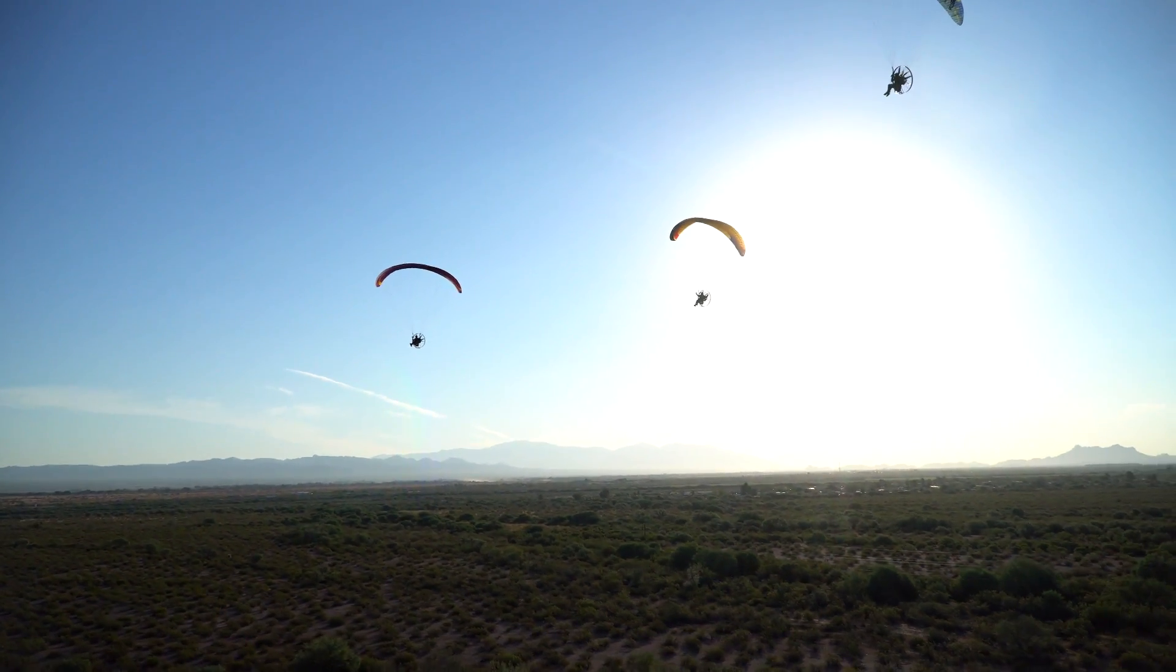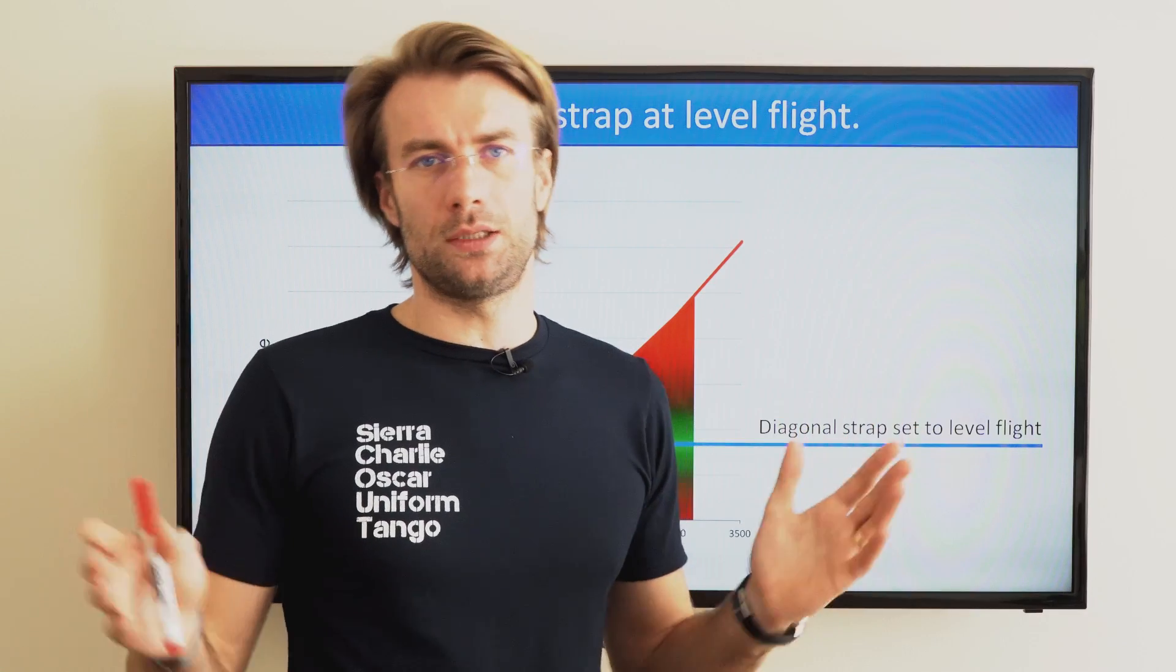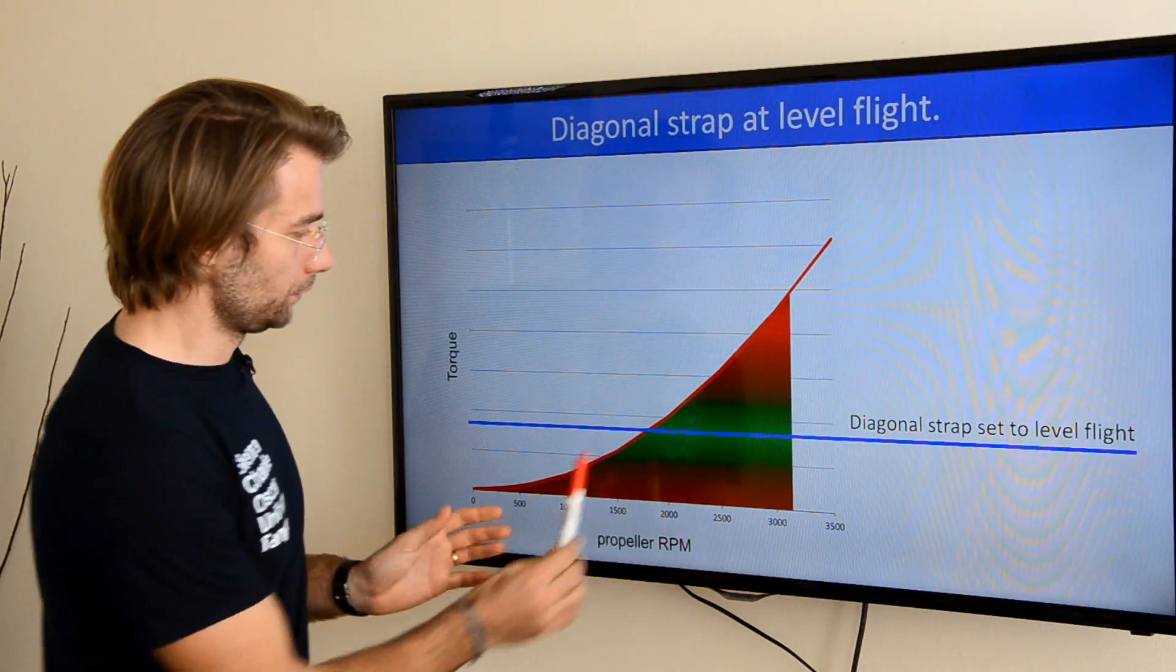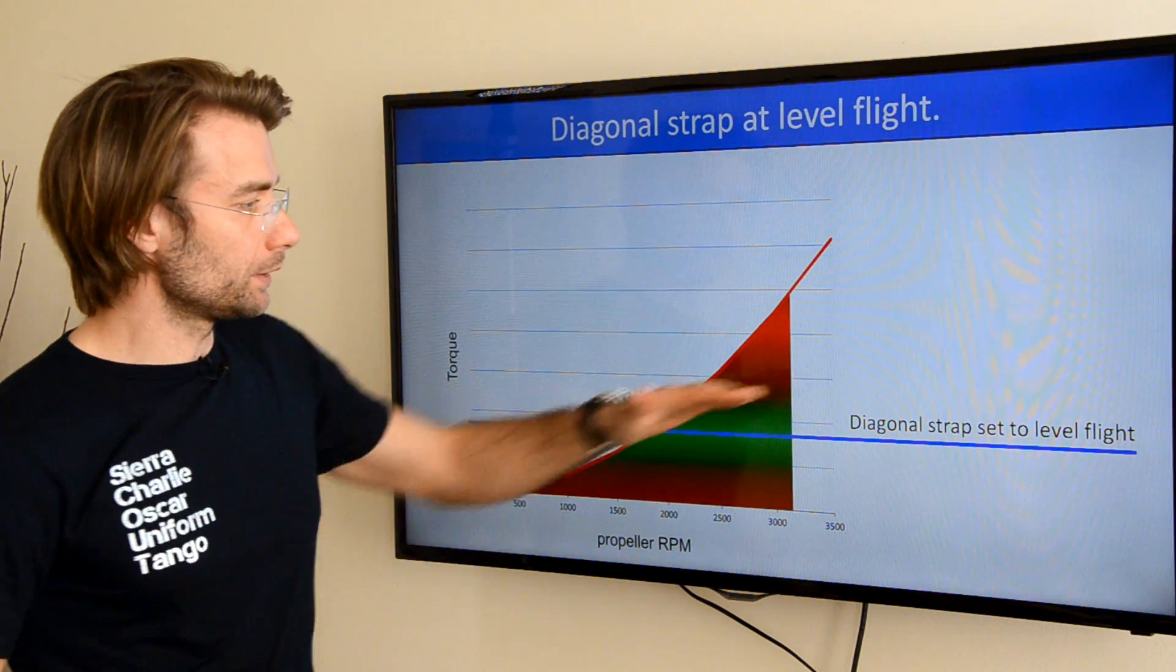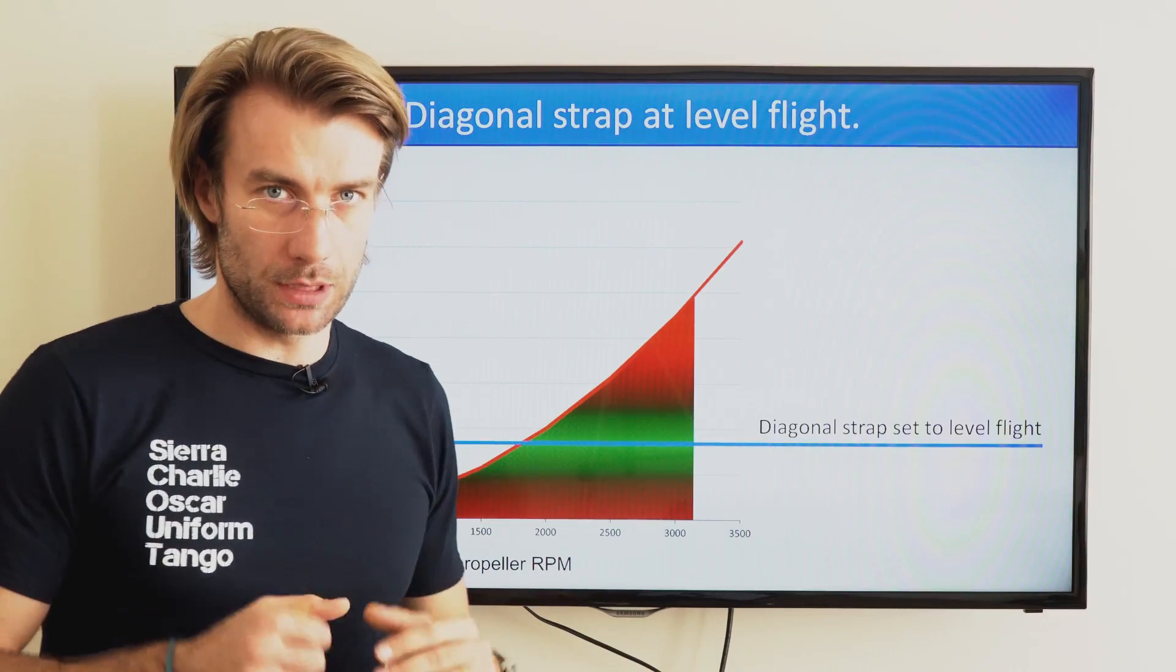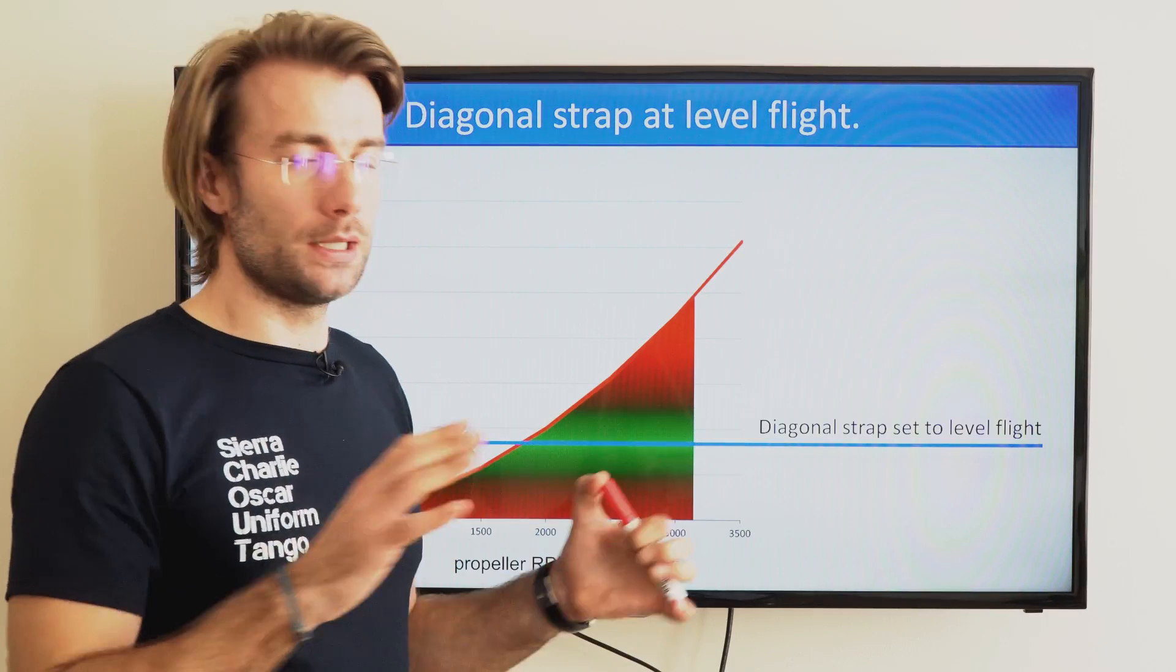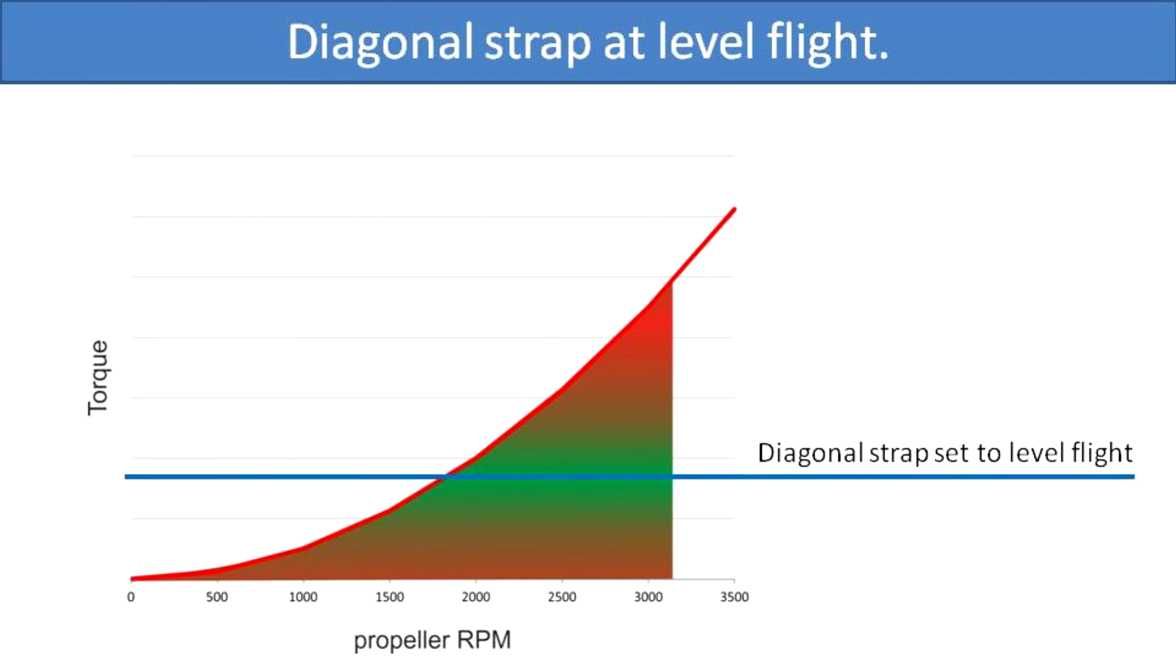Let's assume level flight. In my case for level flight I need around 5000 rpm on the engine which refers to around 1800 rpm on the prop. So this would be my level flight, I'm facing this much torque. Now I can adjust my diagonal strap to perfectly compensate the torque for level flight. That is, the paramotor is perfectly balanced with no tendency to turn left or right.